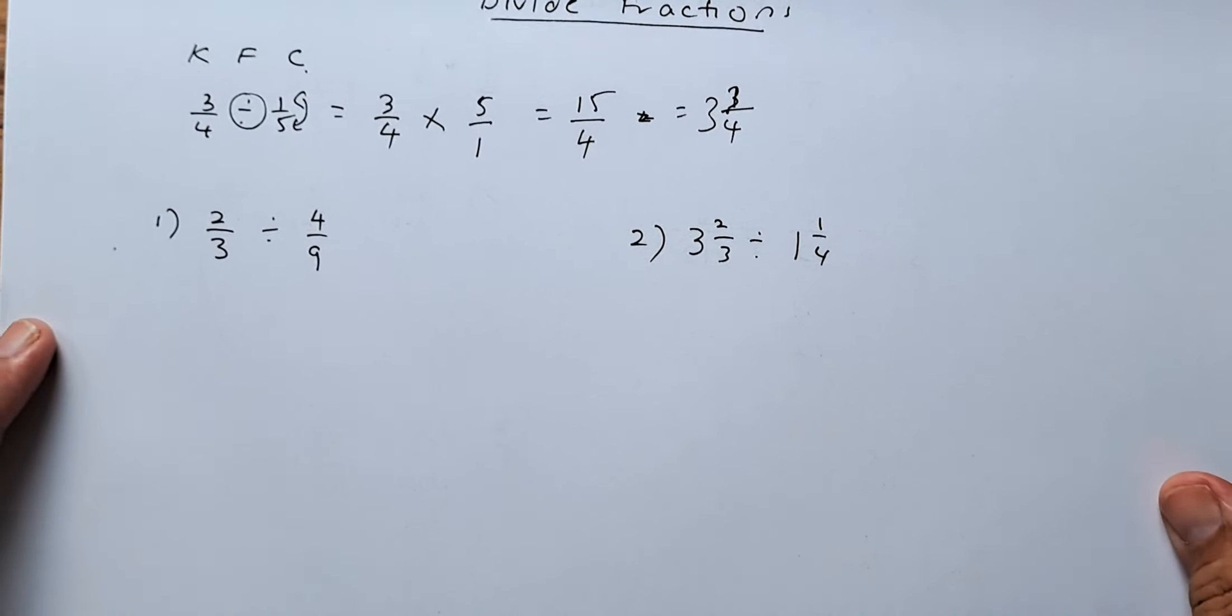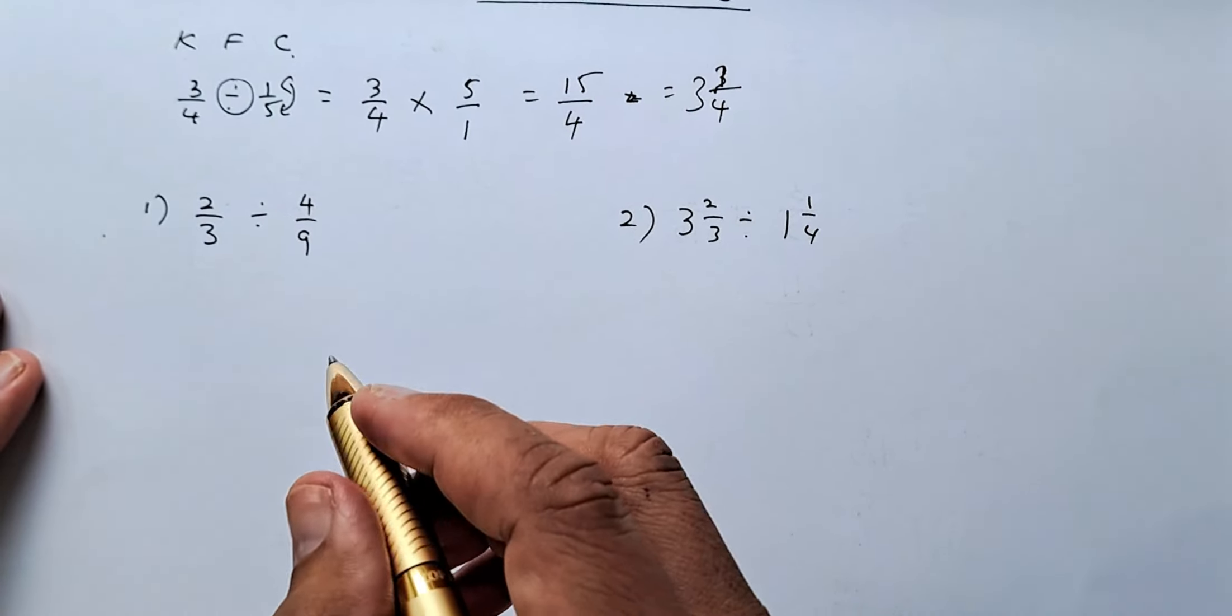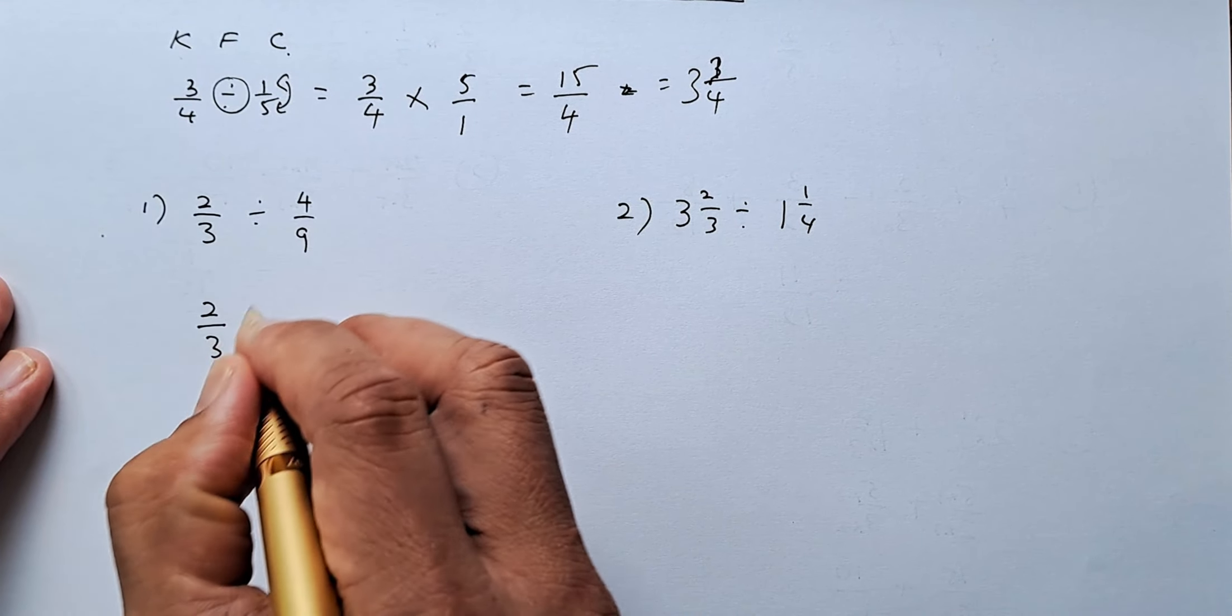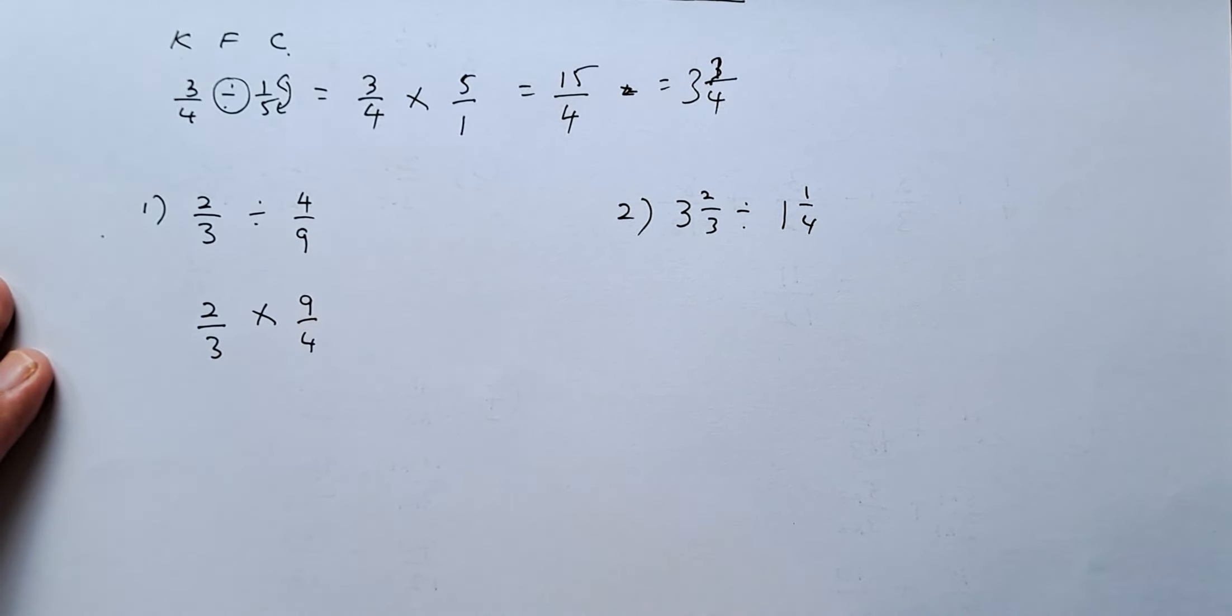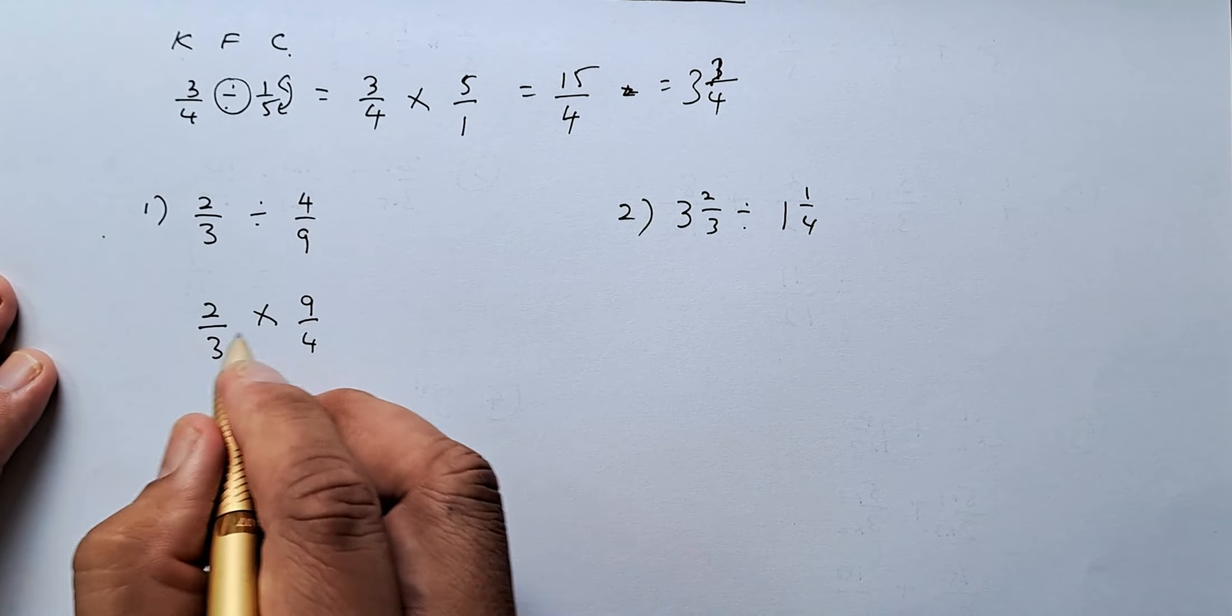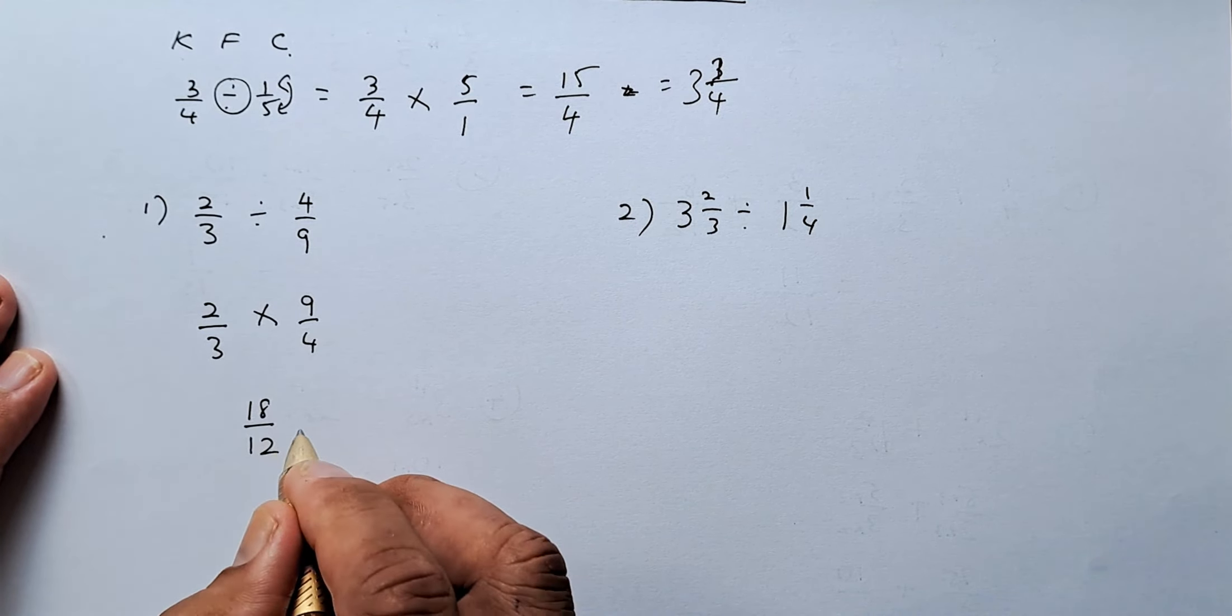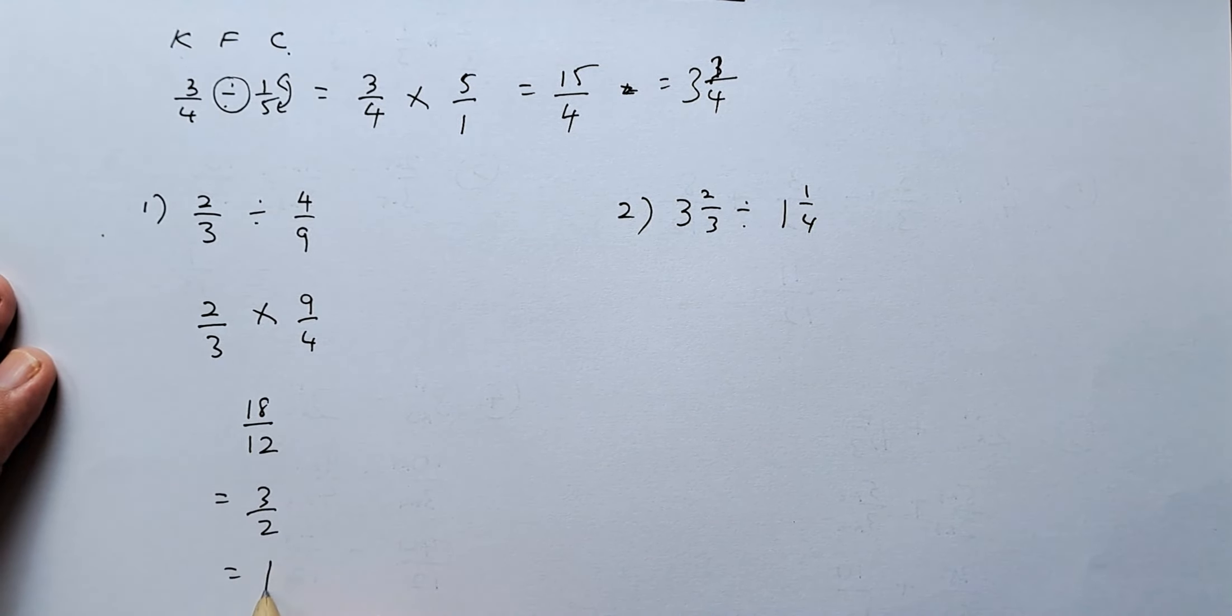Now we shall look at two examples. The first example is 2 thirds divided by 4 ninths. Very simply, first fraction remains. So you keep them. Second fraction you flip. So become 9 over 4. Divide becomes a multiply. Then you just multiply the numerator with numerator and denominator with denominator. So 2 times 9 is going to be 18. 3 times 4 is going to be 12. Simplify them is going to be 3 over 2 divided by 6, and it's going to be 1 and a half.